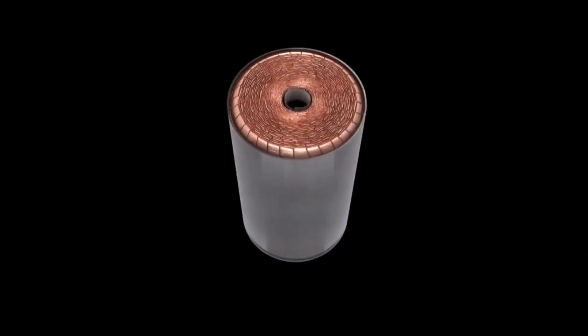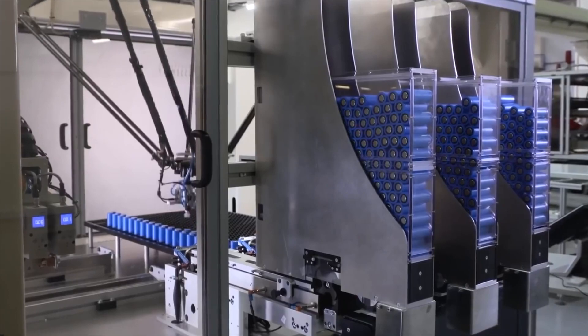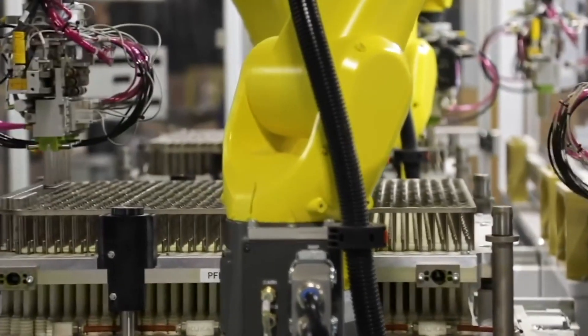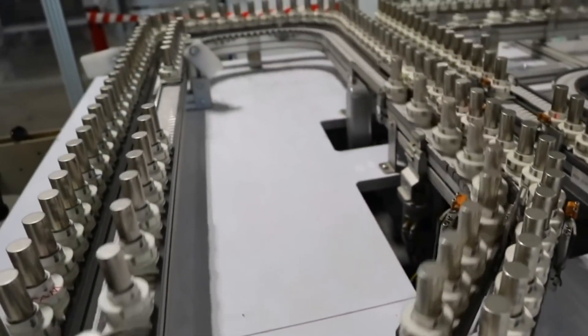Once Tesla has figured production at the Kato facility, it is expected to deploy high-volume 4680 battery cell capacity at those new factories under construction. Tesla has previously disclosed 4680 battery production goals of 100 GWh by 2023 and 3,000 GWh by 2030.